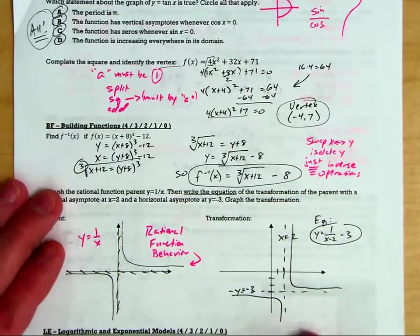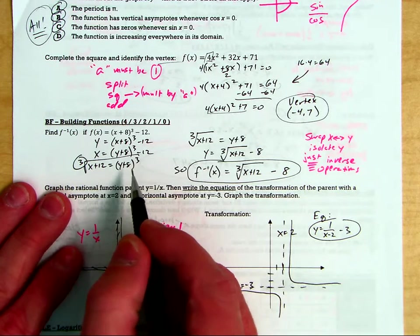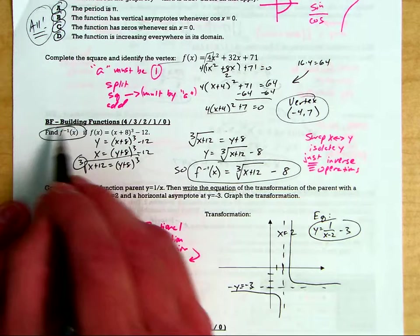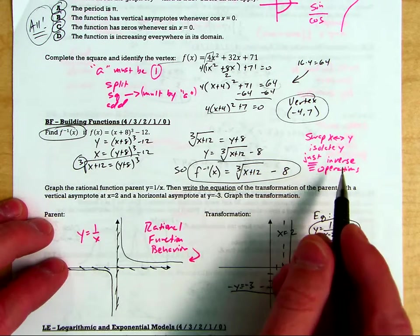I can't tell you how many times kids try to multiply this out and then simplify and then for some reason you're solving for x. I can't understand that when we've done finding the inverse so many times